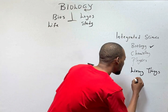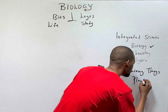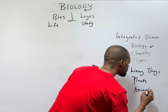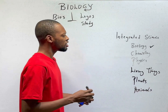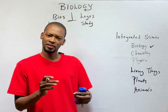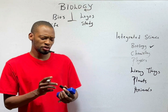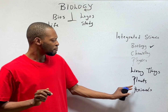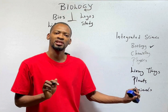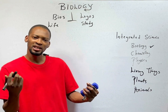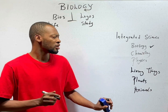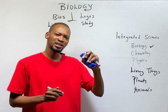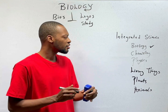Living things are grouped into plants and animals. If I say that animals are living things, you would wholeheartedly agree with me. However, by the time I say plants are living things, some people will still get confused. Don't worry. In the next class, you will see the characteristics that make plants living things.